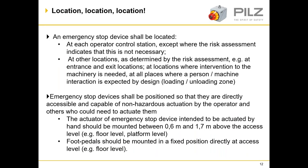Location, location, location — this really matters. An emergency stop shall be located at each operator control station, except where the risk assessment indicates that this is not necessary. Also at locations determined by the risk assessment — for example at entrance and exit locations, at locations where intervention to the machinery is needed, and at all places where a person and machine interaction is expected by design, such as loading and unloading zones. Emergency stop devices shall be positioned so that they are directly accessible and capable of non-hazardous actuation by the operator and others who need to actuate them.